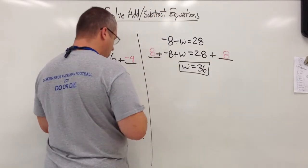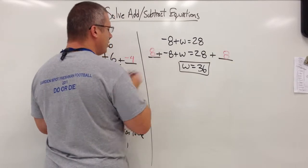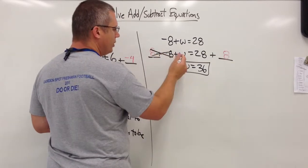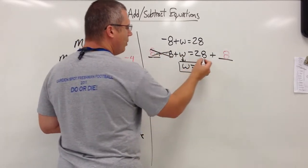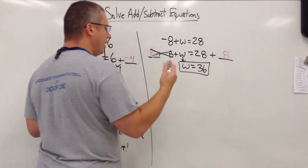8 plus negative 8 is 0. W comes down all by itself. 28 plus 8 is 36. Done.